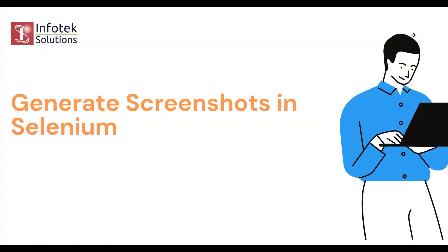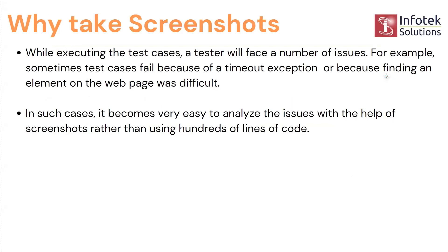Now this is very interesting — here we'll see if a test case fails, how we can generate a screenshot. Usually when you write multiple lines of code and come across an error, you go to that particular line and find where the error is. But instead of that, if you get a screenshot, you can easily figure out where the error occurred. While executing a test case, a tester faces issues like timeout exceptions or difficulty finding an element on a web page — screenshots make it easy to analyze.